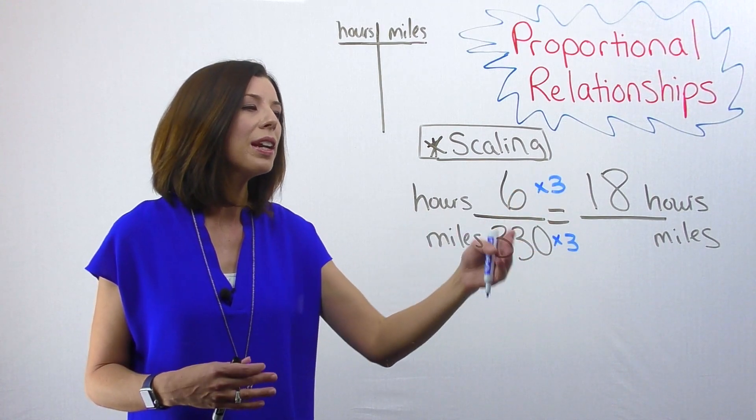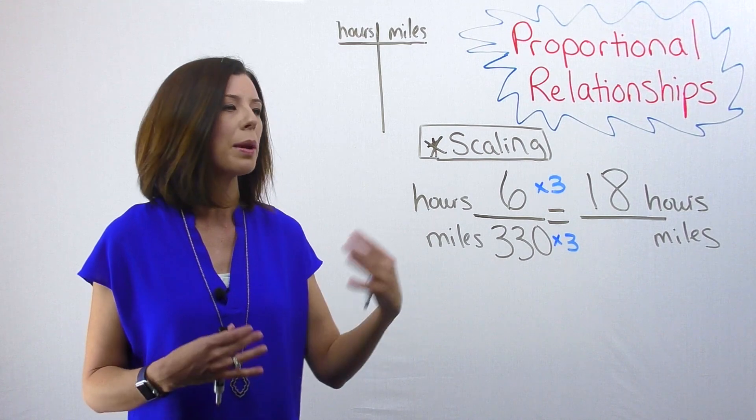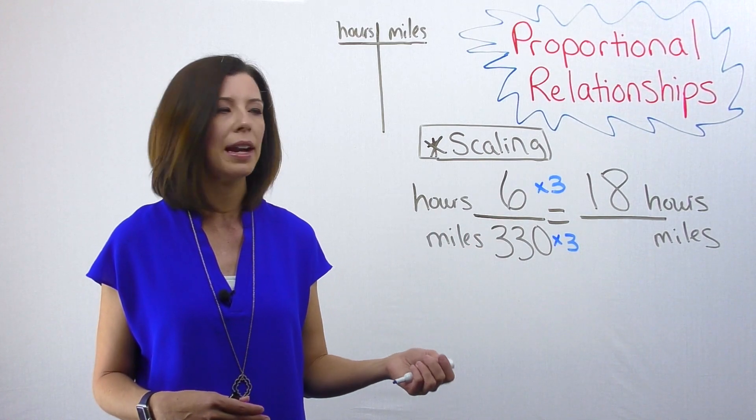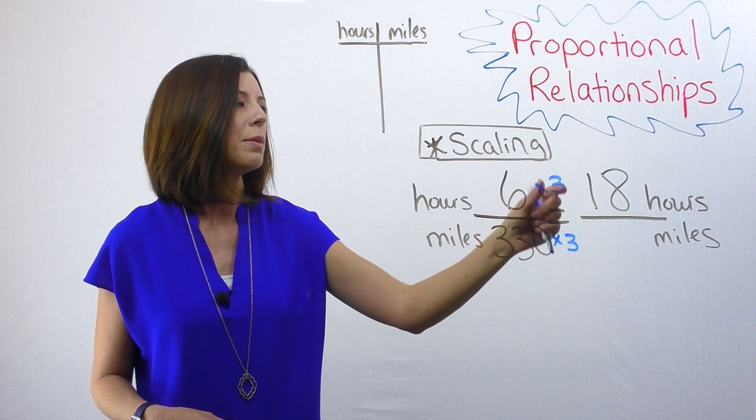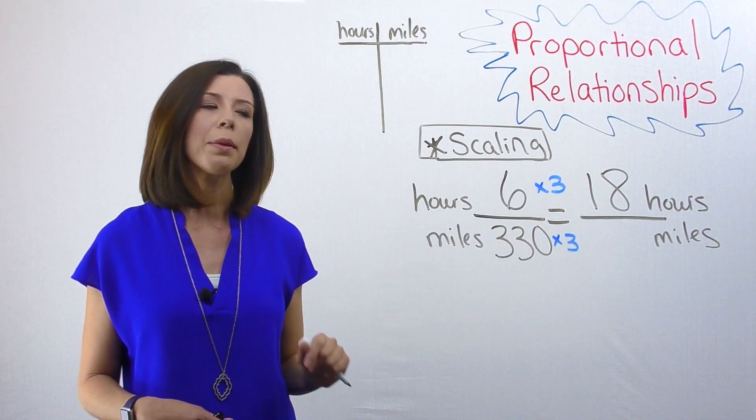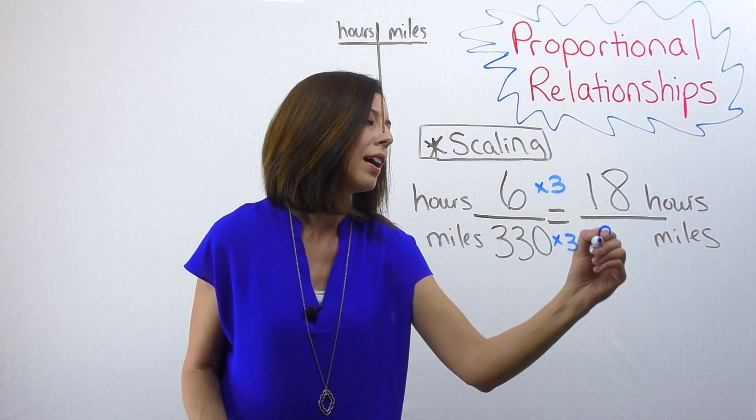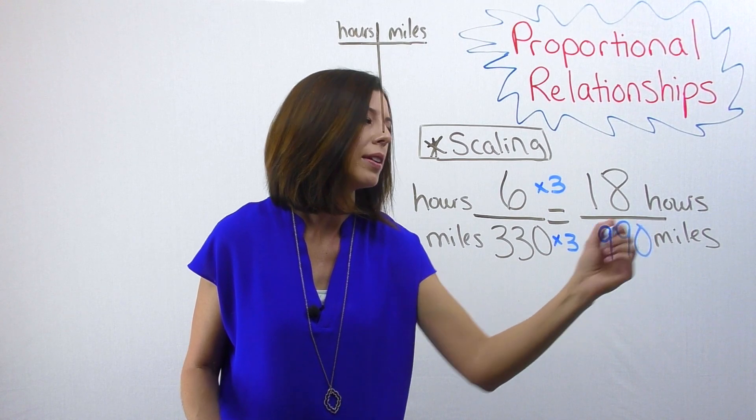So I'm not changing my problem any here. I know that six times three is 18, 330 times three gives me 990 miles.